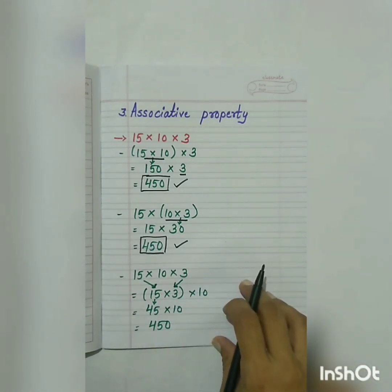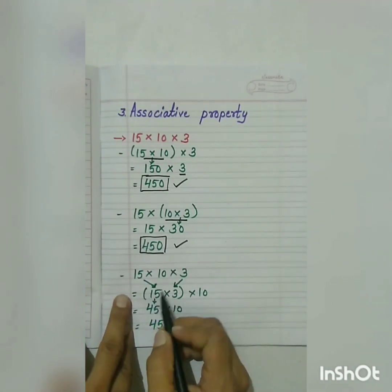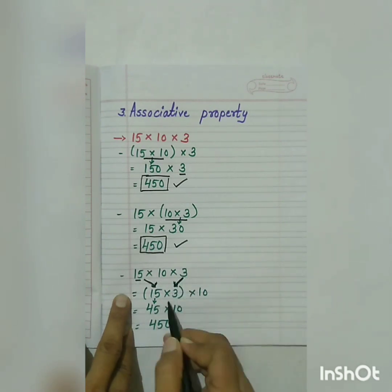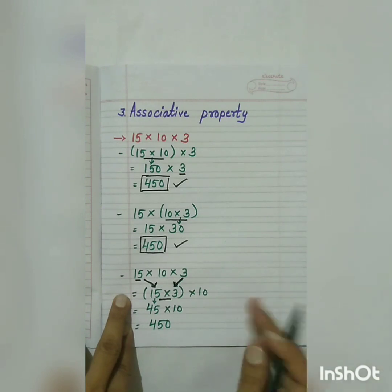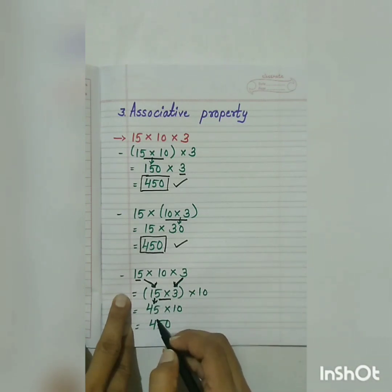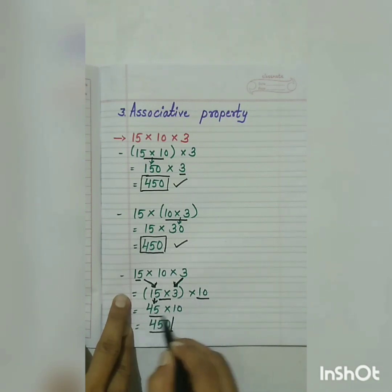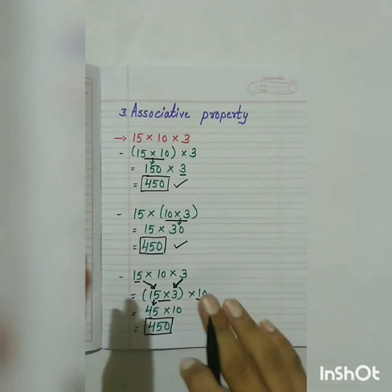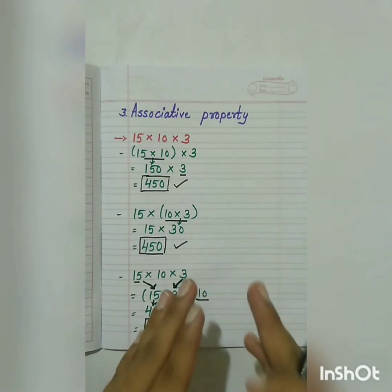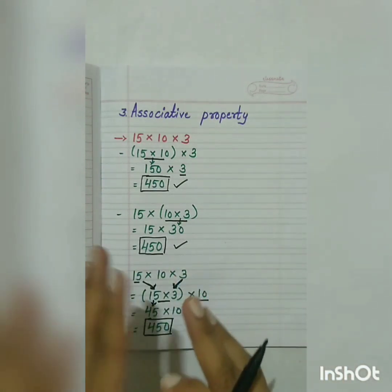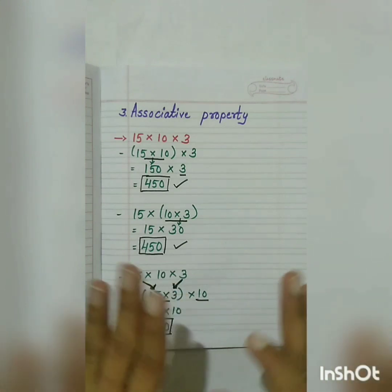One more way we can do this. We can take the number at the first place and multiply it with the number at the third place: 15 multiplied by 3, we get 45. Then we multiply it with the second number, and we still get the same product, 450. It means even if the order is changed, whether we multiply the 1st and 3rd numbers first, then with the rest, the product will always be the same.